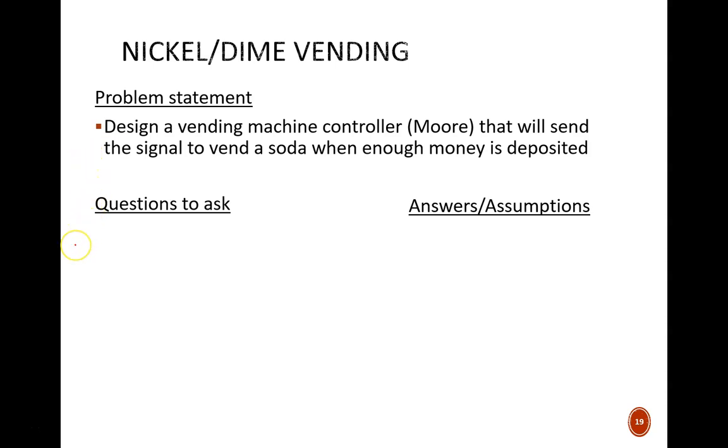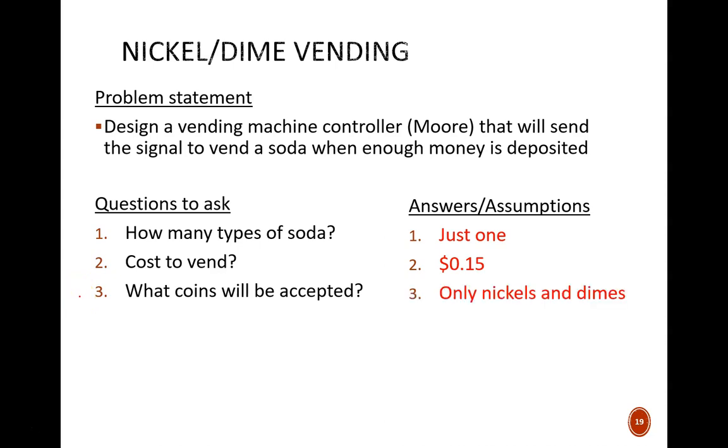My first question is, how many types of soda are in the machine? Our assumption will be just one, which simplifies things because we don't need our circuit to select a specific product. Second question, what is the cost of the soda? The answer is 15 cents. Third question, what types of coins will be accepted? We already stated that in the video intro. Only nickels and dimes, no pennies, no quarters.